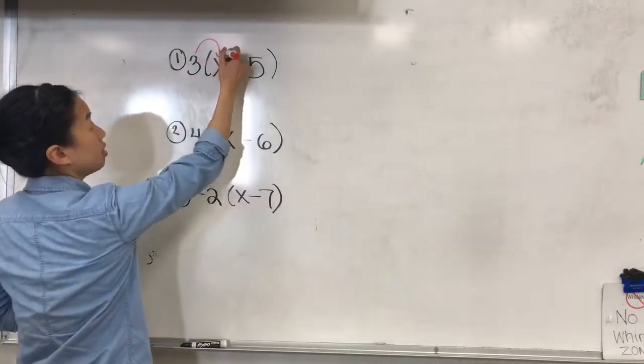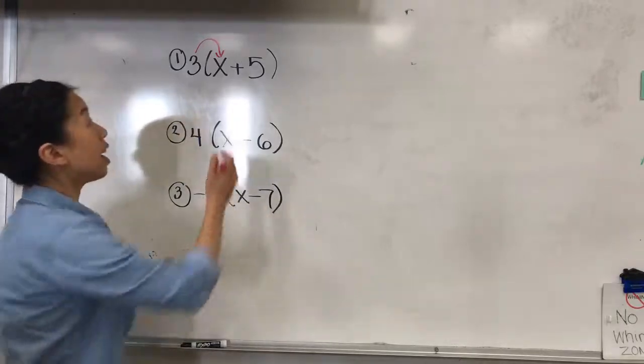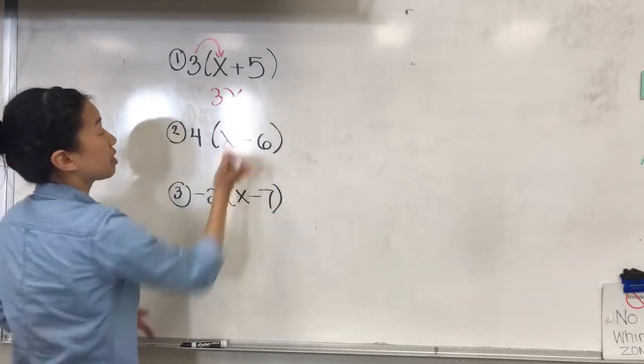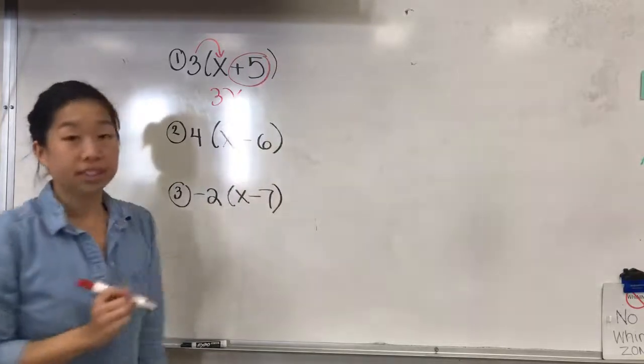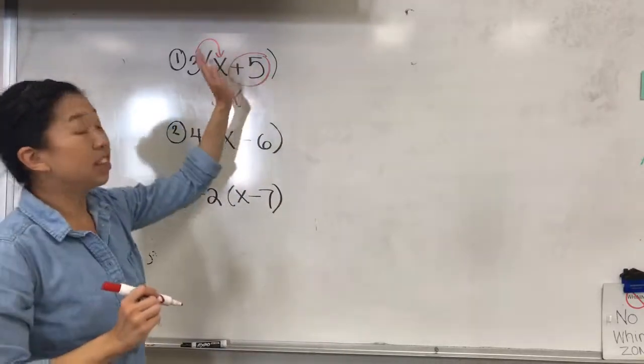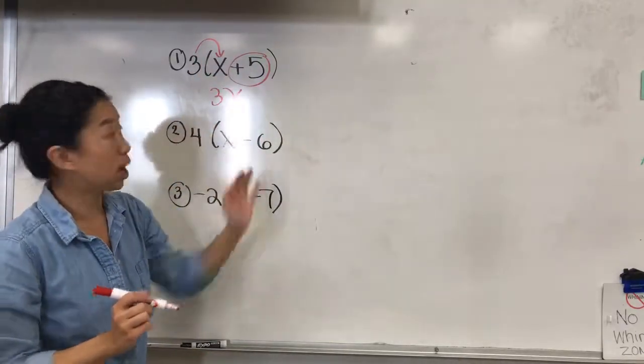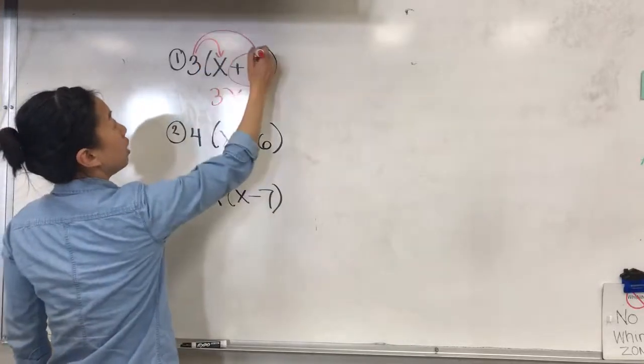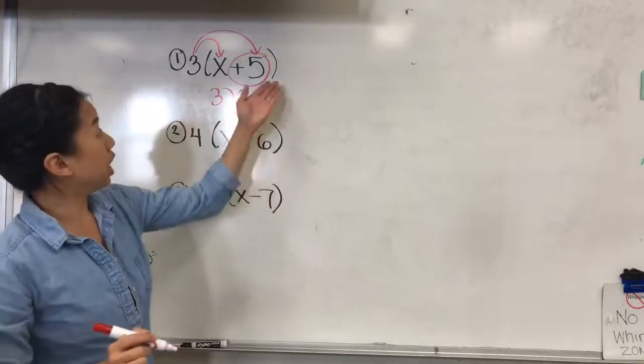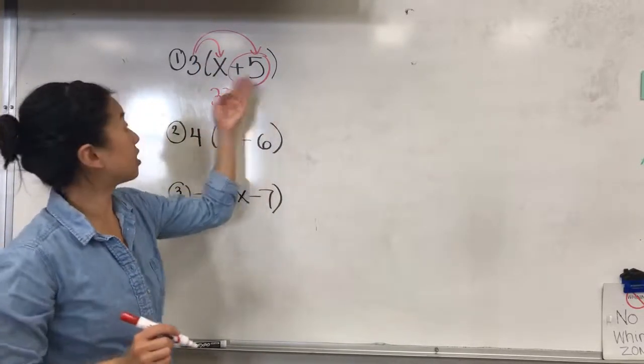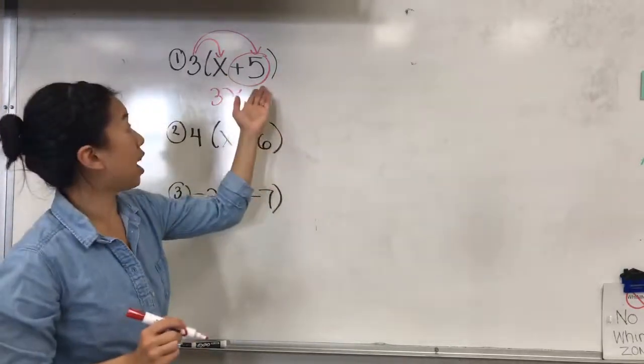Like this, so we have 3 times x which is 3x. And then I have them circle the second term including the positive negative addition subtraction sign. And then we rainbow the outside term with whatever the secondary number is, in this case plus 5, positive 5.